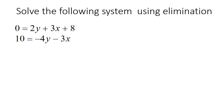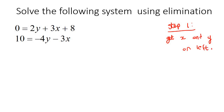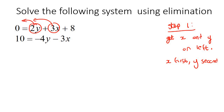Step one: what I want you to do is get x and y on the left, and get the x first, then y second. So I want you to take these two over to the left, but put the x first. So minus 3x, then minus 2y — that would become a minus 2y. And then on the right-hand side, you keep the number there, which is the 8.